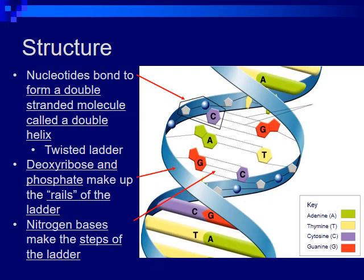The nucleotides bond to form a double-stranded molecule called a double helix — it looks like a ladder if you twisted it. The deoxyribose and the phosphate molecules make up the rails, or the outside, of the ladder. Meanwhile, the nitrogen bases — A, T, C, and G — make up the steps, or the inside of the ladder.